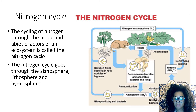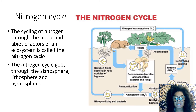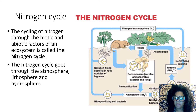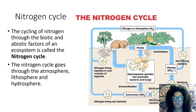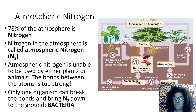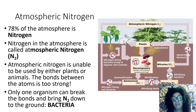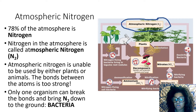The nitrogen cycle is the cycling of nitrogen through the lithosphere, atmosphere, and hydrosphere. Just like with the carbon cycle and the water cycle, nitrogen has to go through all of the spheres in order to be available for living organisms. The cool thing about nitrogen is that it makes up 78% of our atmosphere. That nitrogen in the atmosphere is called atmospheric nitrogen, and its chemical formula is N2 — meaning two nitrogen atoms bonded together.